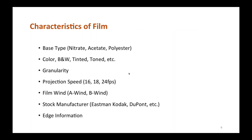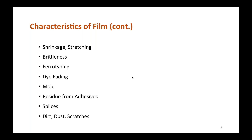Film also has characteristics such as base type, color, and granularity — characteristics imposed by camera and projector operators, lab technicians, and film manufacturers, such as projection speed, film wind, and stock type. Over time, a film can shrink or stretch, become brittle, color films can fade, they can develop mold from harsh environments, and suffer abuse from projection such as residue from adhesives, splices, dust, dirt, and scratches.